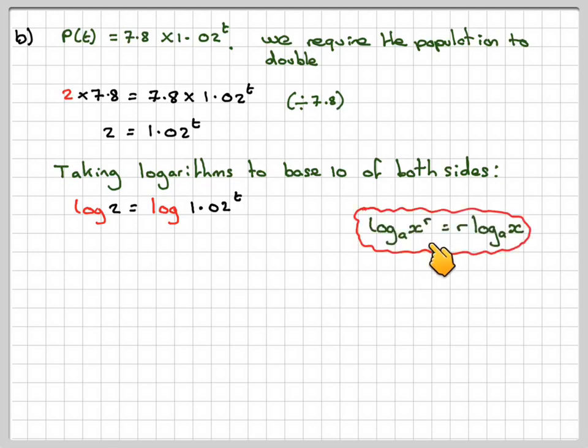We've got log base A of X to the R is R times log base A of X. So that means we can take that T and put it down in front. So we've got log₁₀(2) = T × log₁₀(1.02). We want to find T, so we divide both sides by log(1.02).